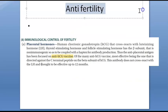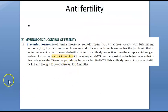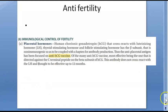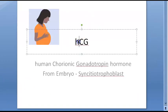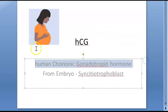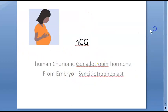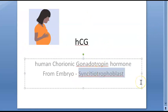There is something interesting called an anti-HCG vaccine for anti-fertility purposes. In this video we have looked at human chorionic gonadotropin hormone — it comes from the placenta, specifically the syncytiotrophoblast, which is part of the chorion. Hence it is called human chorionic gonadotropin hormone.